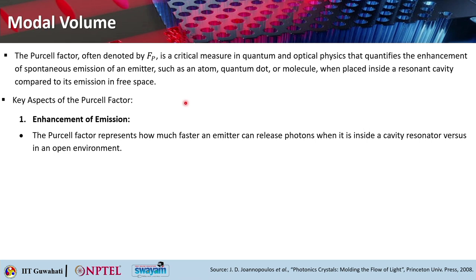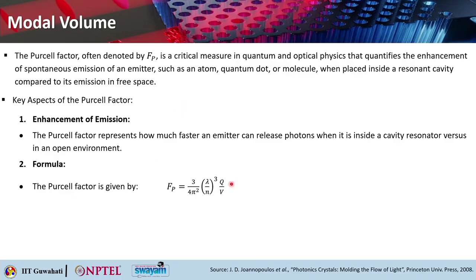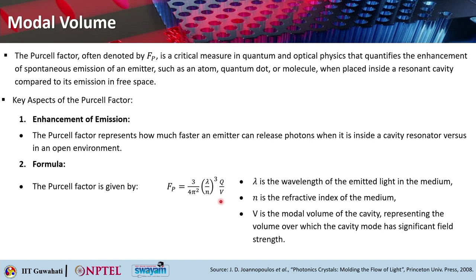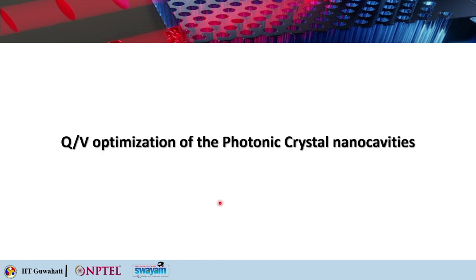The Purcell factor represents how much faster an emitter releases photons inside a cavity resonator versus in an open environment. The formula is: Fp = (3/4π²)(λ/n)³ × (Q/V), where n is the refractive index of the medium, λ is the wavelength of the emitted light in the medium, and V is the modal volume of the cavity representing the volume over which the cavity mode has significant field strength.